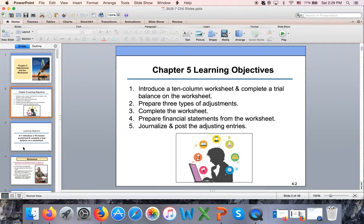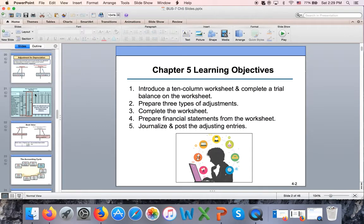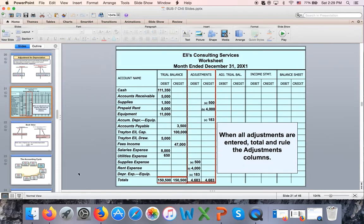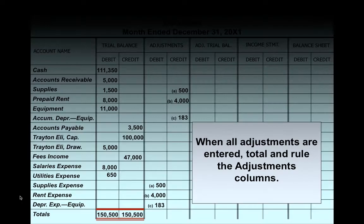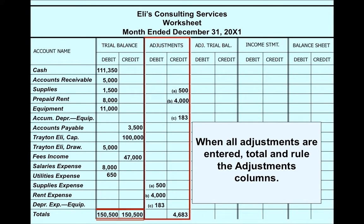Some students find this information quite challenging. Adjustments are very fundamental to the study of financial accounting — they will not go away. Here we have three types of adjustments, and we will have probably about a dozen of them in Chapter 12, and you will learn more in future classes. Make sure you understand the dynamic behind it. Do not memorize — understand what you're doing.